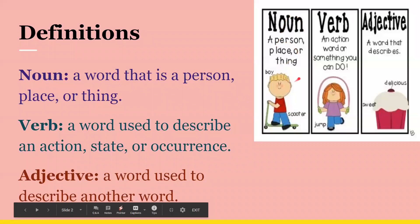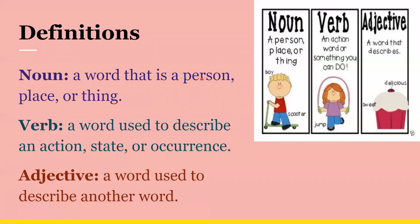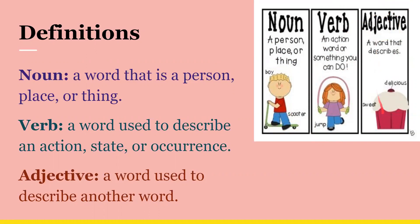So a noun is a person, place, or thing, like we said here. And some examples are a boy and a scooter. And a verb is an action word or something you do — so like this girl right here is jump roping. Then we have an adjective, a word that describes. So we could call this cupcake sweet or delicious.